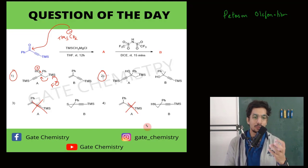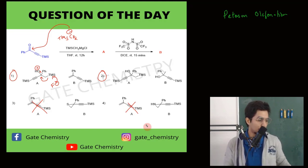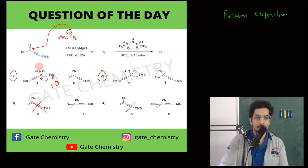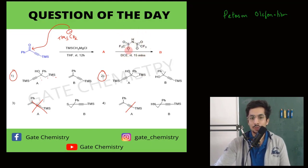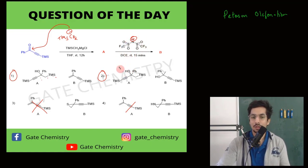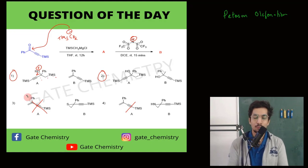We are left with options 1 and 2. The second step is where Peterson olefination comes in. The reagent here is a Brønsted acid — a source of H⁺. The NH proton is extremely acidic because removing it leaves an N⁻ anion stabilized by two electron-withdrawing groups and conjugation. This protonates the OH group, forming an oxonium ion, and then elimination takes place — that's Peterson olefination.